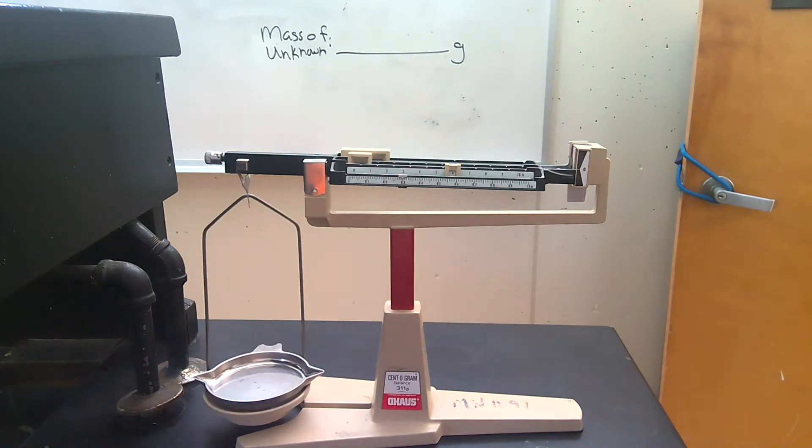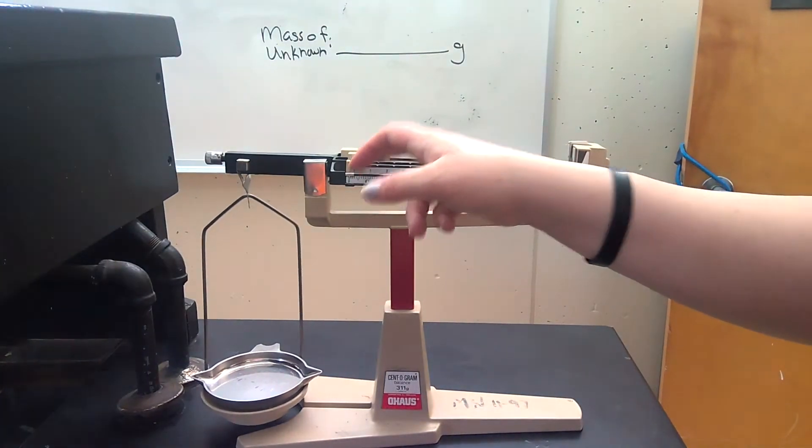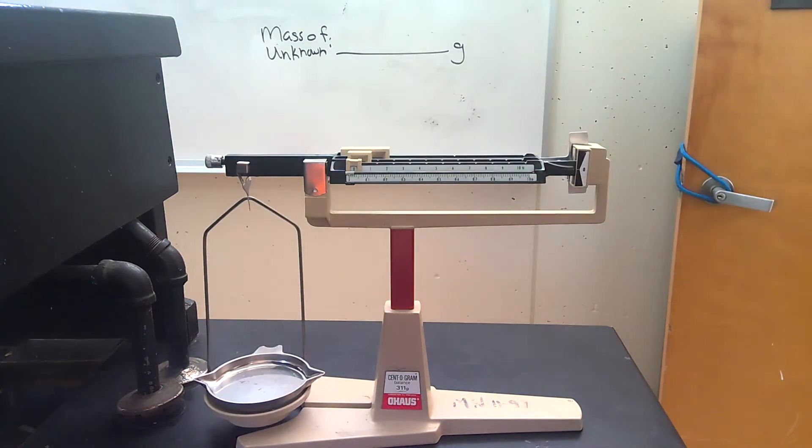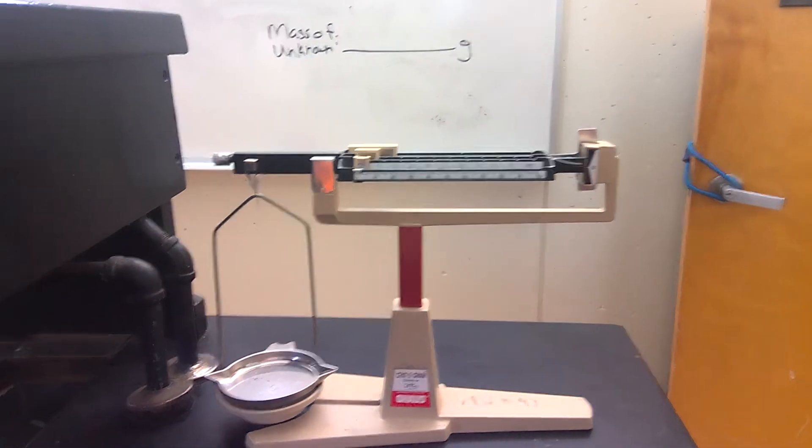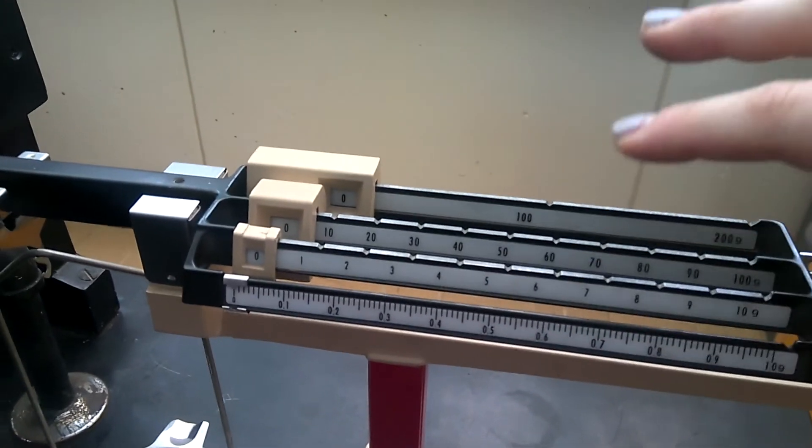So the first thing is we need to make sure that our quadruple beam balance, which is what we use in chemistry to find the mass of an object. To find mass, we use the unit measurement of grams. This is called the quadruple beam balance because quad meaning four, there are four riders.